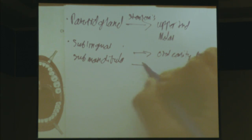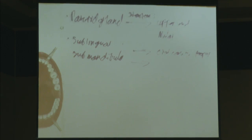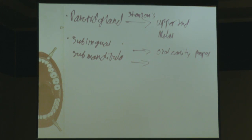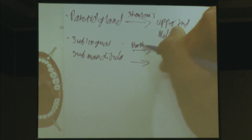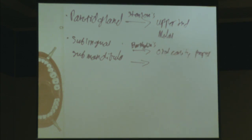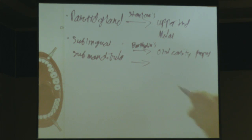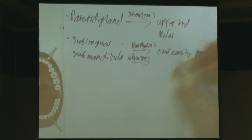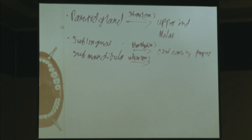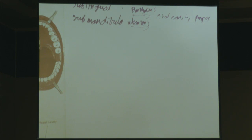The duct draining the sublingual gland is Bartholin's duct. For the submandibular, it's Wharton's duct. It's important to recognize these ducts by name and know which glands they are associated with.